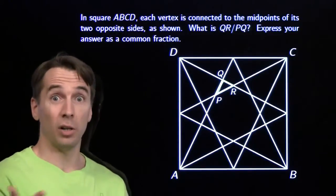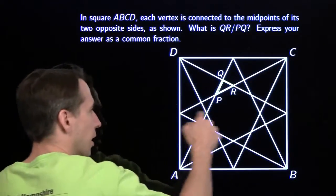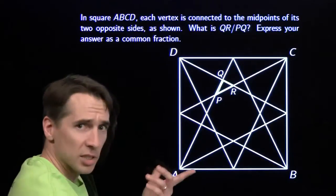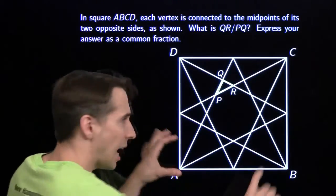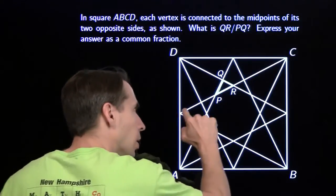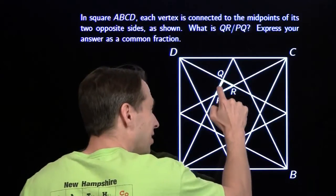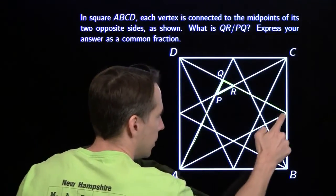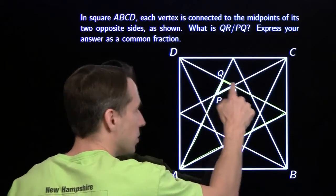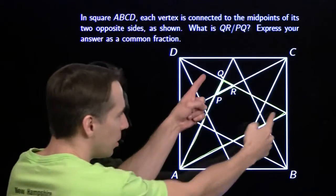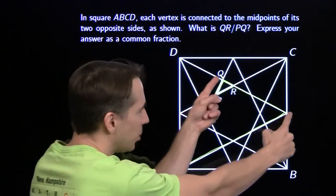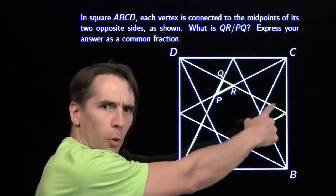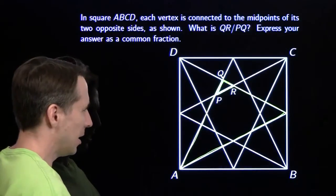While it looks like this line is parallel to that, we've got a parallelogram. This is a parallelogram because these two lengths are equal — each is half the side length of the square — and they're clearly parallel. That makes this a parallelogram. So this side is parallel to this side, which tells me that this little triangle here is similar to this larger triangle. Unfortunately, I don't know anything about these lengths either, but we're getting closer to the vertices and midpoints of the square.